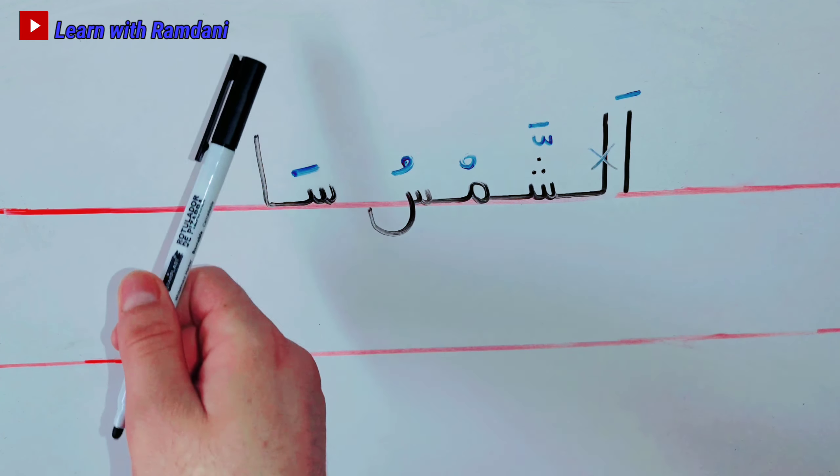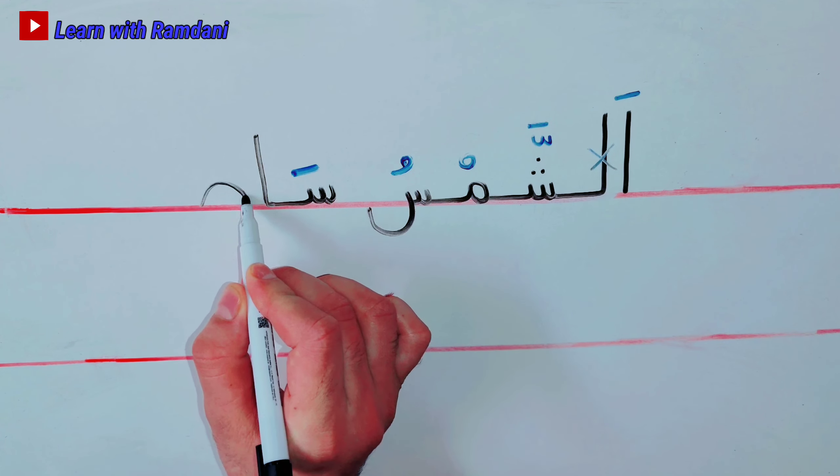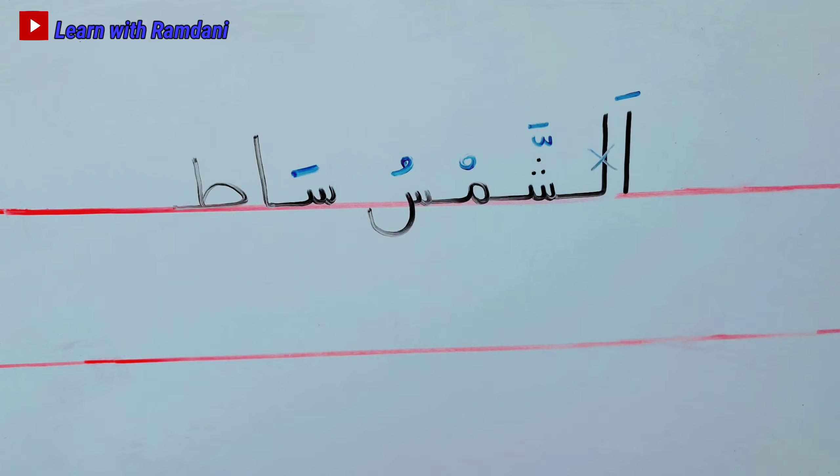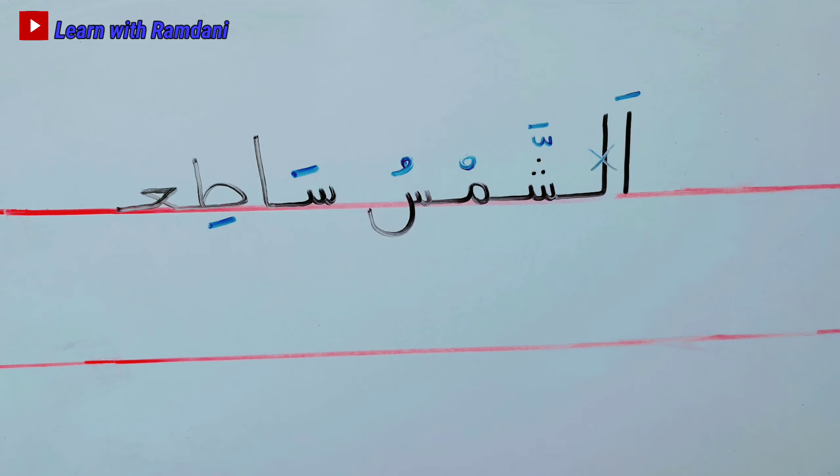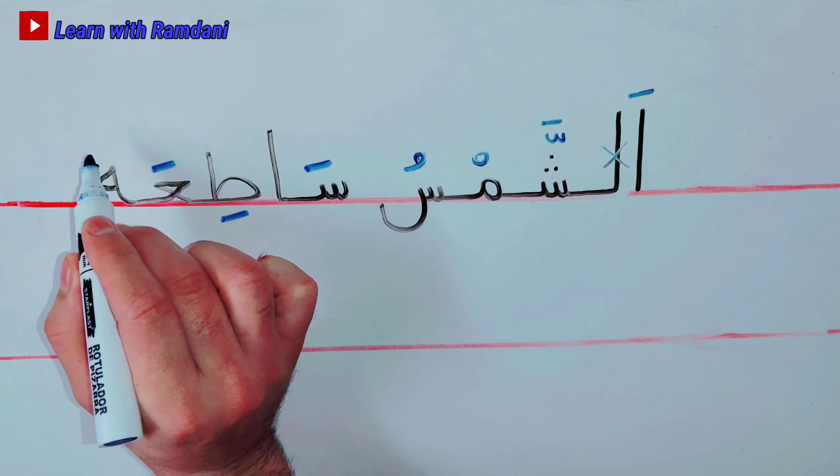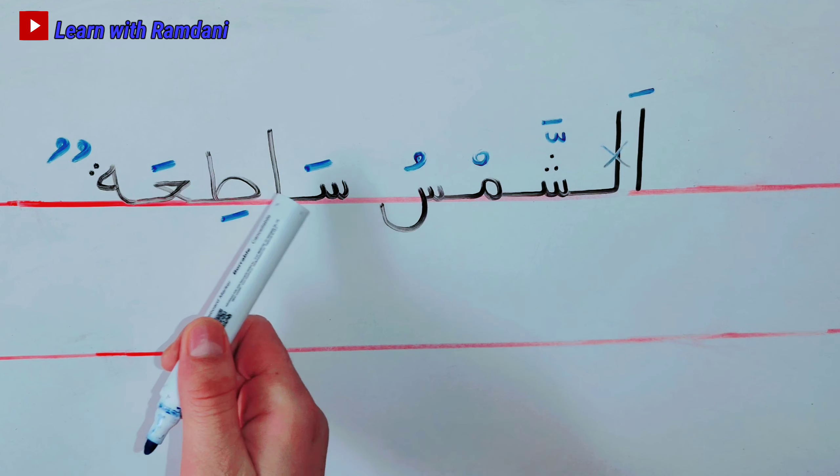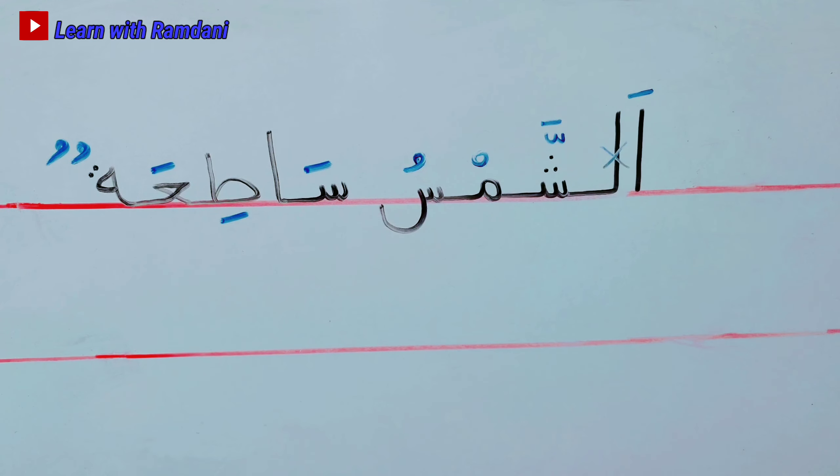And then the letter ta. We put kasra. And then the last letter, we put tanween. Tun, sa-ti-a-tun. As-shemsu sa-ti-a-tun.